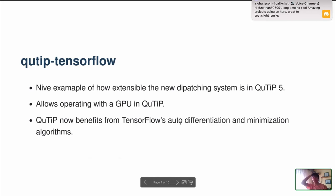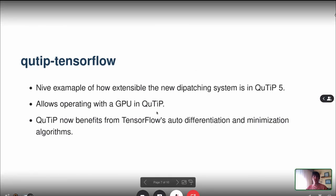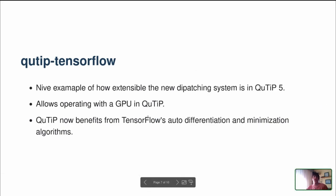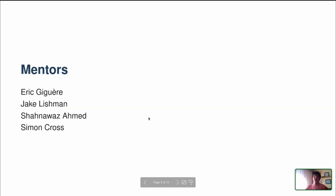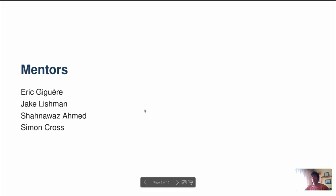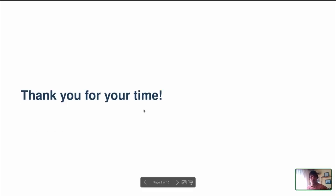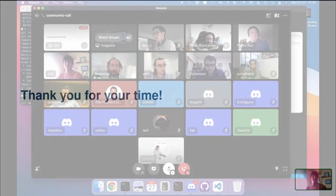To summarize, Qt TensorFlow is a nice example of how to extend the Qtip backends. It allows operating with a GPU and has interesting features such as autodifferentiation and minimization that you can benefit from. I would like to thank my mentors Eric, Jay, Sanawas, and Simon, and also the whole Qtip admin team. Thank you all for your attention, and if you have any questions, please go ahead.